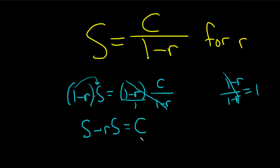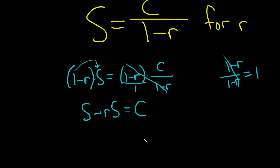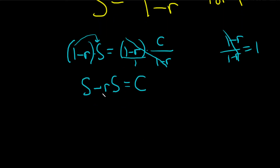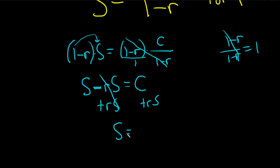We're looking for little r, and there's a negative in front of it. A lot of people are tempted to just add the rs to both sides — let's do it that way. It makes r positive, which makes it a little bit easier to not have to deal with the negative sign.